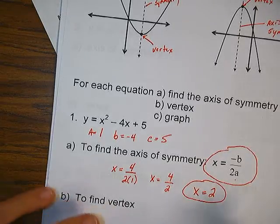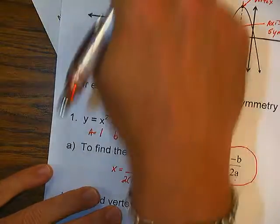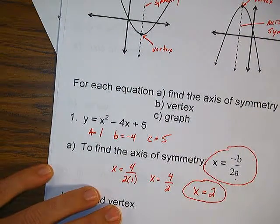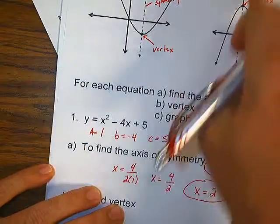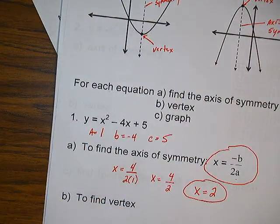I just plugged in my a and b into the formula. When I simplify, x equals 4 over 2, which is the same as 4 divided by 2, which is 2. This right here is my equation for the axis of symmetry: x equals 2. Every axis of symmetry graphs a vertical line — you're going to have x equals a number.